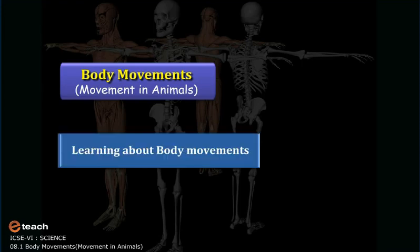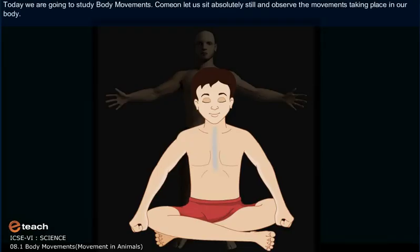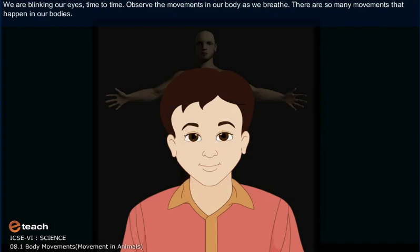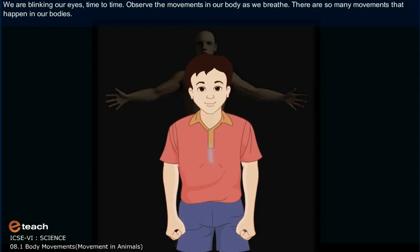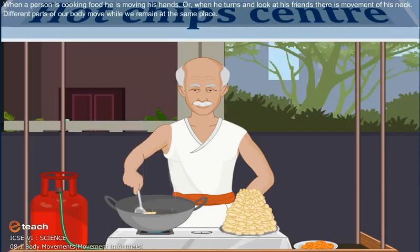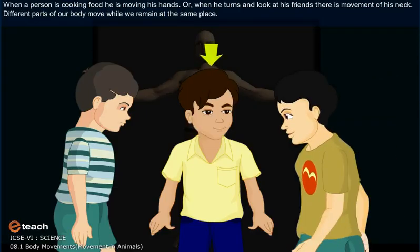Today we are going to study body movements. Let us sit absolutely still and observe the movements taking place in our body. We are blinking our eyes from time to time. As we breathe, there are so many movements that happen in our bodies. When a person is cooking food, he is moving his hands, or when he turns to look at his friends, there is movement of his neck. Different parts of our body move while we remain at the same place.